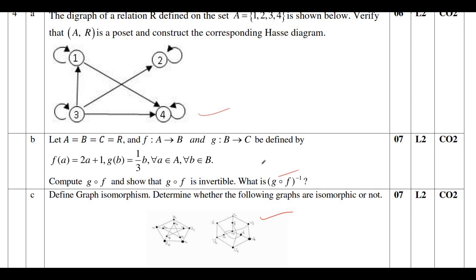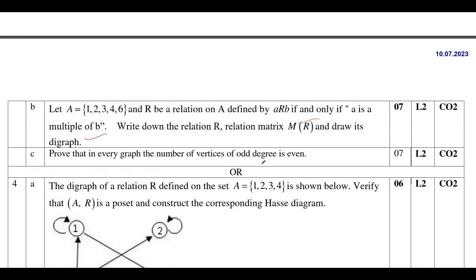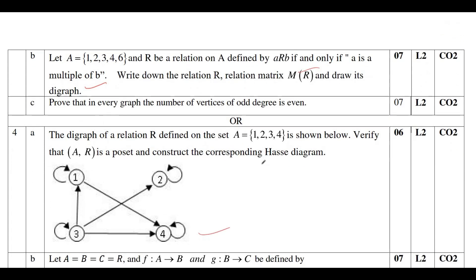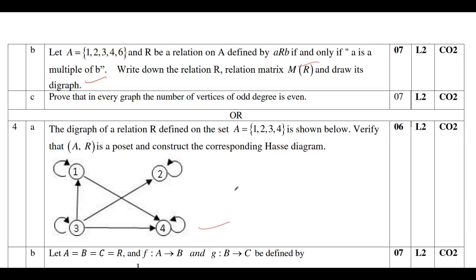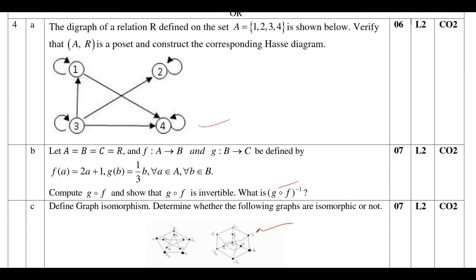If you study these topics — composition function, matrix relation, digraph, Hasse diagram, invertible function, and isomorphism — you can definitely score 14 marks here. In this module also, you can score a minimum of 14 marks if you study these topics.